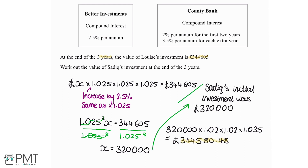We get one mark for starting the process of working out the initial investment amount, a second mark for correctly working it out, then one mark for working through Sadiq's calculation, and a final mark for getting the correct answer.